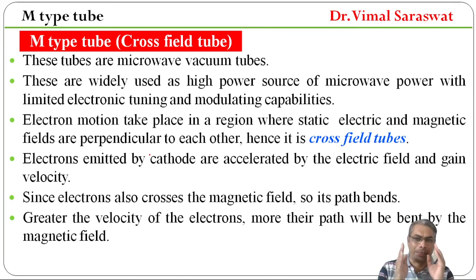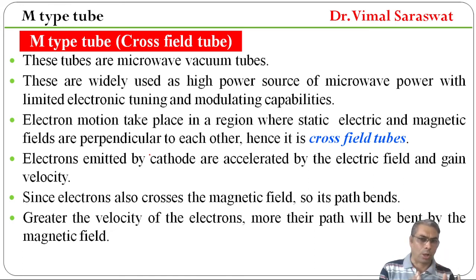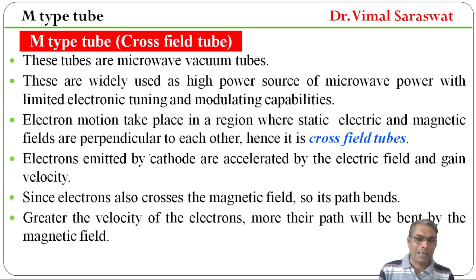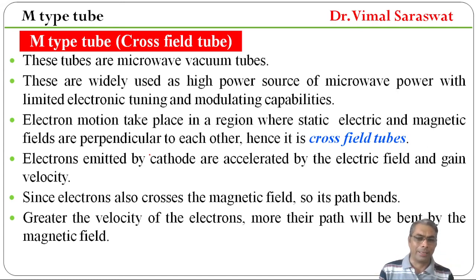Electrons की जितनी velocity ज्यादा होगी, उतने ही जब वो magnetic field से cross होंगे, तो उनका path deviate होगा, या वो अपने path से bent होंगे.